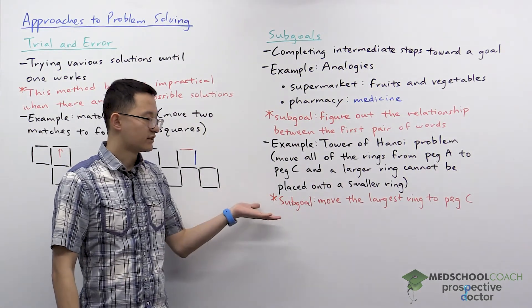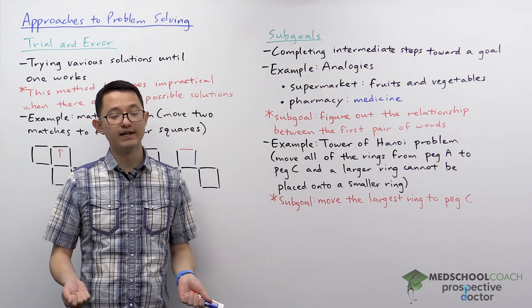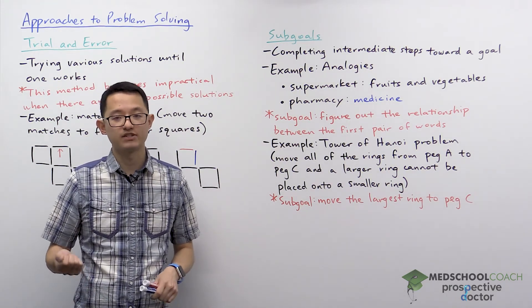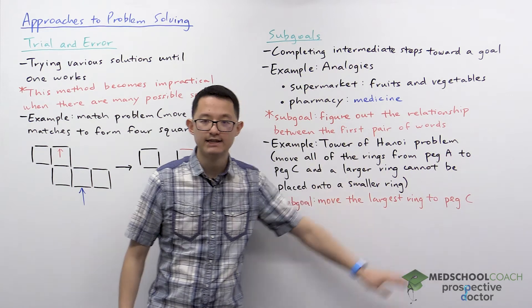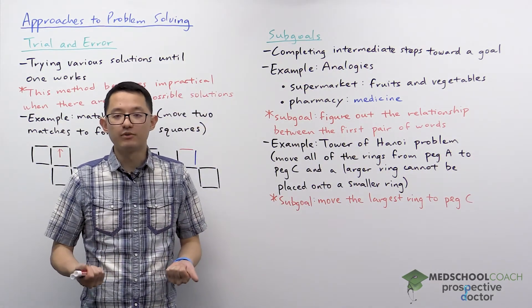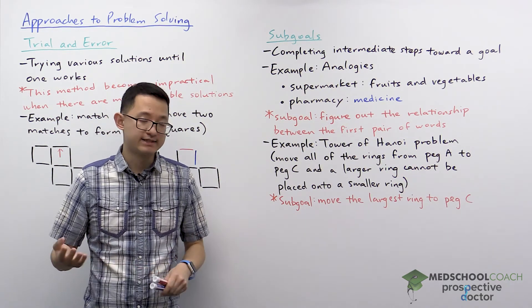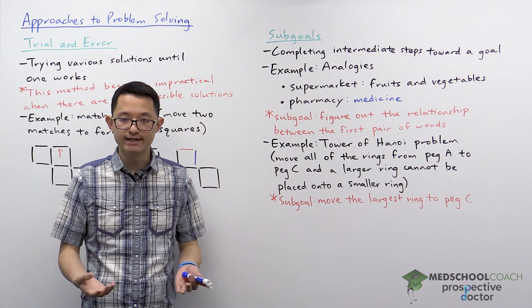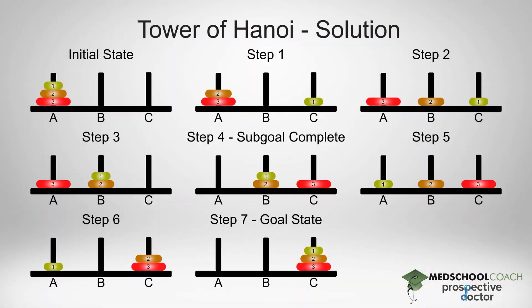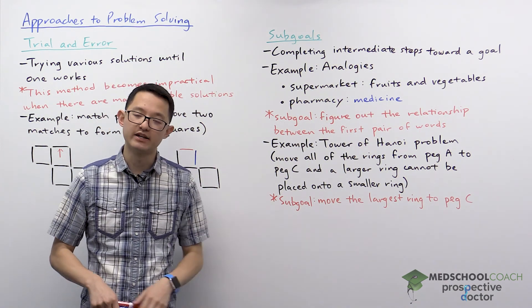So what is a good subgoal we can use here? If you think about the final state, you know that the largest ring has to be on the bottom of peg C. So that could be your subgoal: move the largest ring to peg C. If you can first solve this subgoal, then the rest should be easier. You can take several steps to get the largest ring on peg C, and once you do, the remaining steps of getting the middle and smallest rings onto peg C aren't too bad, giving you the desired final state where all three rings are on peg C. This shows you how subgoals can help you solve problems.